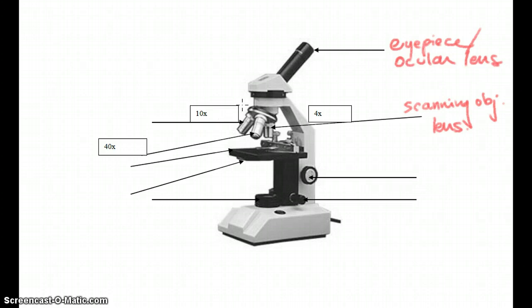The 10x, which magnifies the image 10 times on its own, is what we call the low power magnification. The one that says 40x is our high power, or high objective magnification.